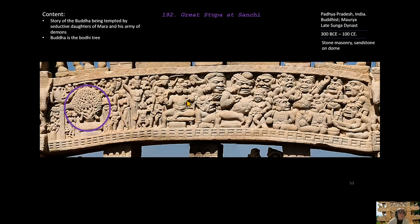The middle architrave is particularly notable. Here the Buddha is again represented as a Bodhi tree, and he is being tempted by the seductive daughters of King Mara, who are approaching him. There is also an army of demons that is here to seduce the Buddha and turn him toward a more negative path — to tempt him from his righteousness.